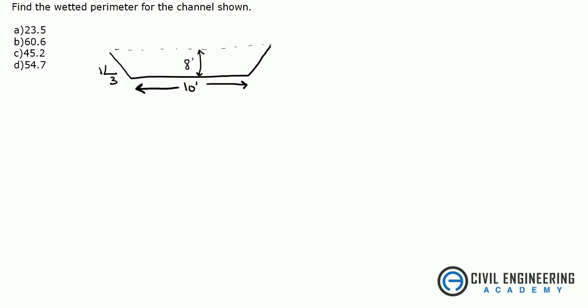So the question is asking what the wetted perimeter is. The wetted perimeter is the length of the line representing the interface between the fluid and the channel. In this case, it is this length right in here. This plus this plus this. That will give you your wetted perimeter.